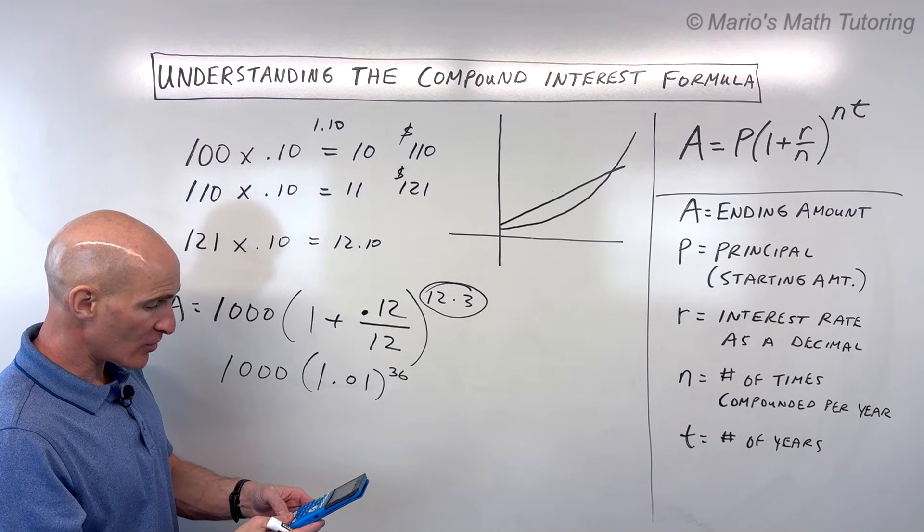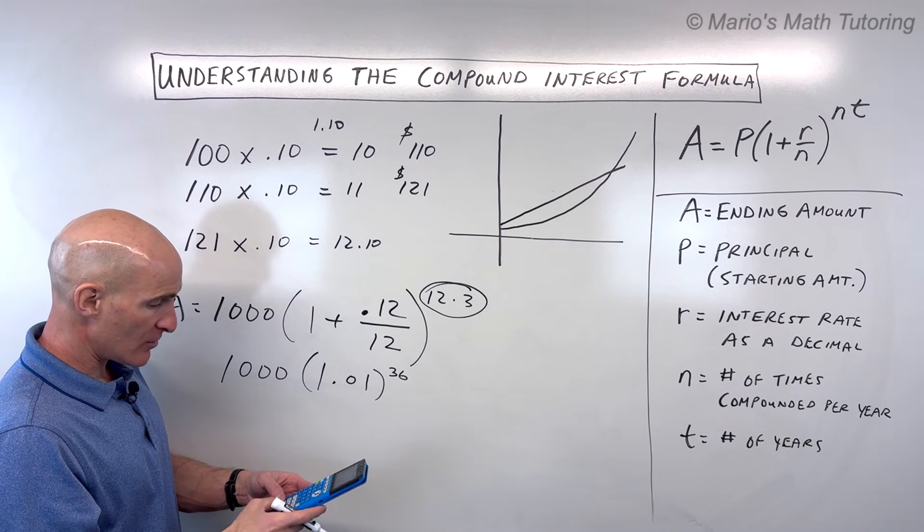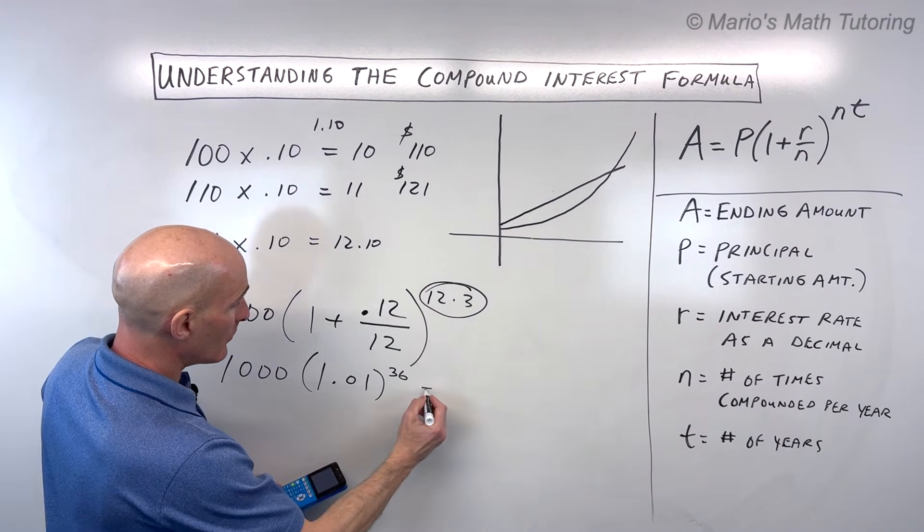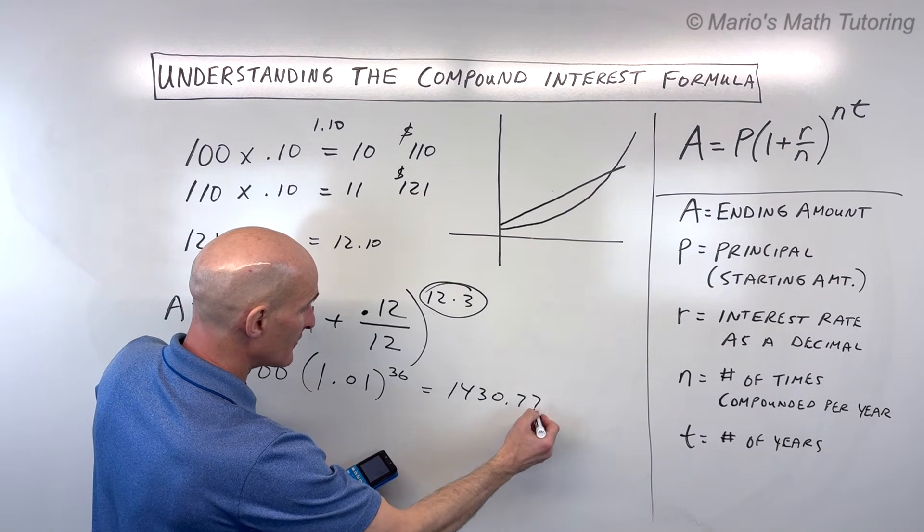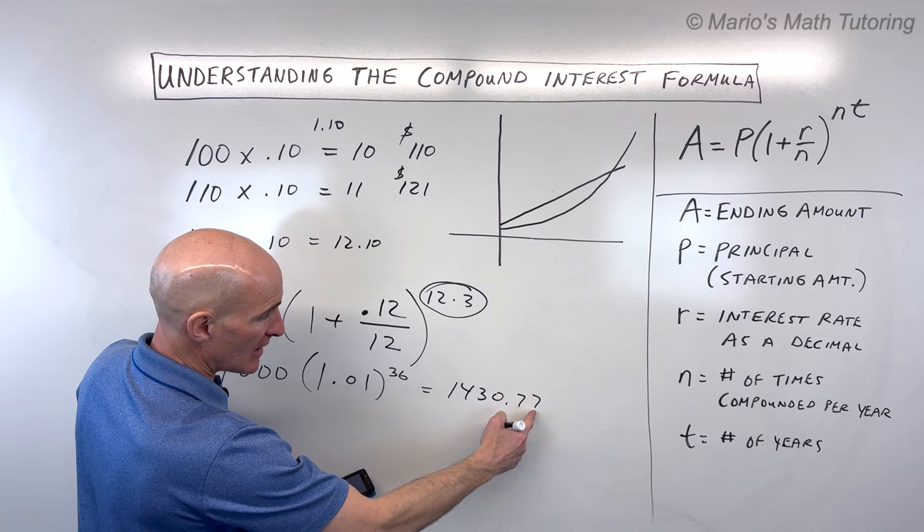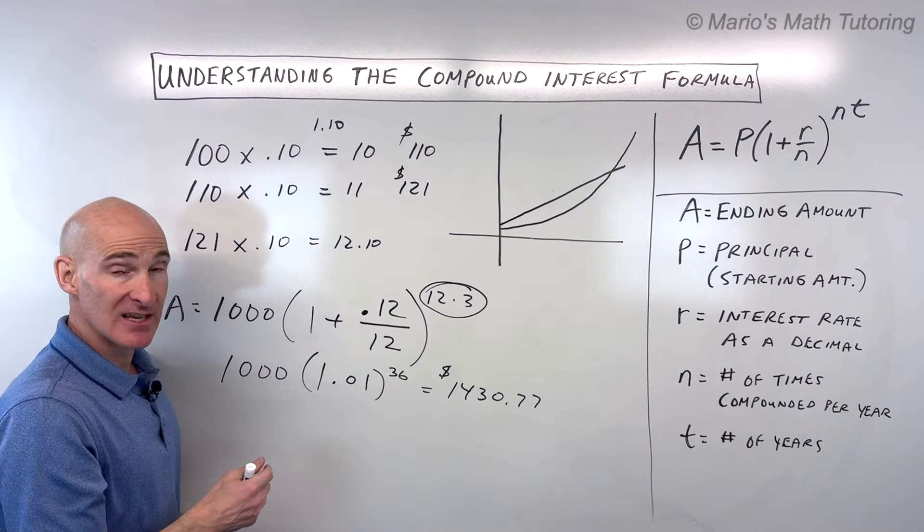So let's go ahead and do this on the calculator. 1,000 times 1.01 raised to the 36 power. You would end up with $1,430.77. I'm just rounding to the pennies. That's the hundredth place here. That's the ending amount. So you've made $430.77.